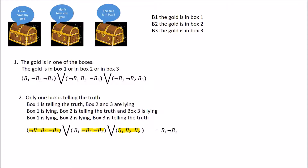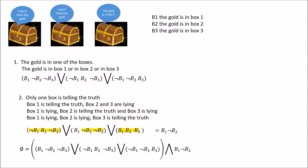So B1 and not B2 — we only need to write not B2 once. We've ruled out two possibilities through logic alone. Now we combine statements one and two using AND. Looking for what B1, not B2 has in common across both, our answer is B1 and not B2. Since B1 and not B2 just stands for B1, the solution is: the gold is in box one.